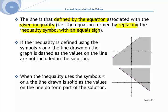If the inequality uses the symbols less than or greater than, the line drawn is dashed, because solutions or values on the line are not included. So whenever you have an inequality with less than or greater than, you need a dashed line.